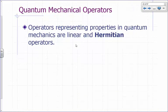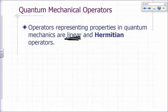Let's talk about quantum mechanical operators. Quantum mechanical operators must be linear. The operators we use in quantum mechanics represent properties — remember, for every property of a system there's a corresponding operator. Those operators must be linear and they must be Hermitian. We already know what a linear operator is, so what's a Hermitian operator?